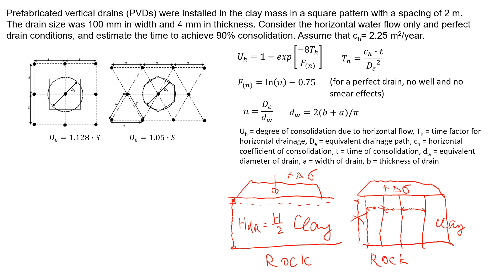We're going to look at this example where we installed prefabricated vertical drains in a square pattern with a spacing of 2 meters. In real life, we can also use 2 meters; sometimes it will be smaller, for example, 1 meter or 1.5 meters. Typically, there is nothing smaller than 1 meter because of the smear effect.